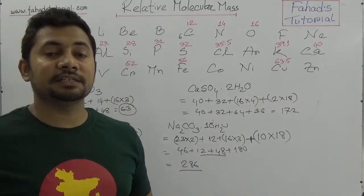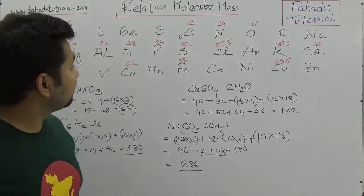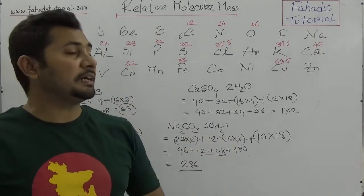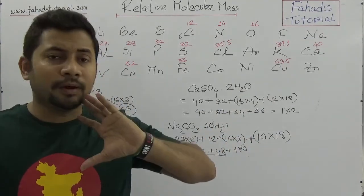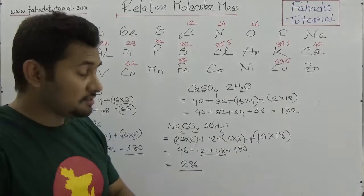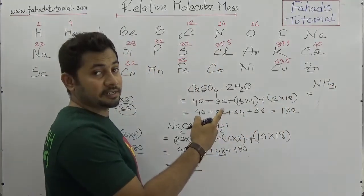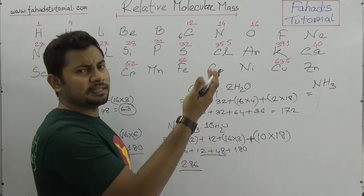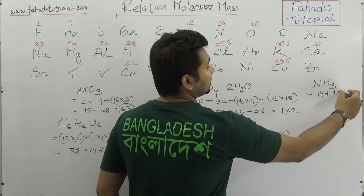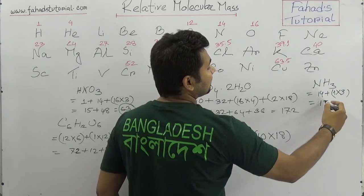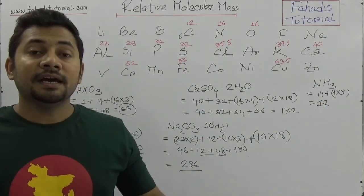For ammonia, NH₃, there is one nitrogen atom and three hydrogen atoms. The relative molecular mass of ammonia is 17 — because nitrogen is 14 plus hydrogen 1 times 3 equals 3, giving 17. For any type of compound you encounter, you can find the molecular mass based on relative atomic mass.